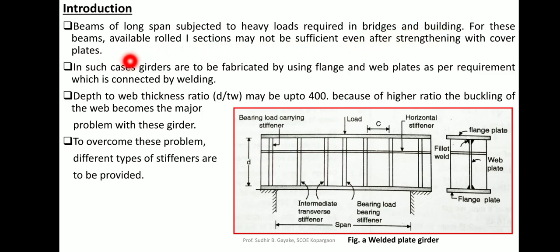Available rolled sections may not be sufficient even after strengthening with cover plates. The highest cross-section available per the steel table is up to ISWB 600. Beyond this, the required plastic section modulus may be insufficient to transfer the moments and forces, so additional plate elements are used at the top and bottom flanges. If that is still insufficient, the entire cross-section is fabricated in the workshop based on the required plastic section modulus.